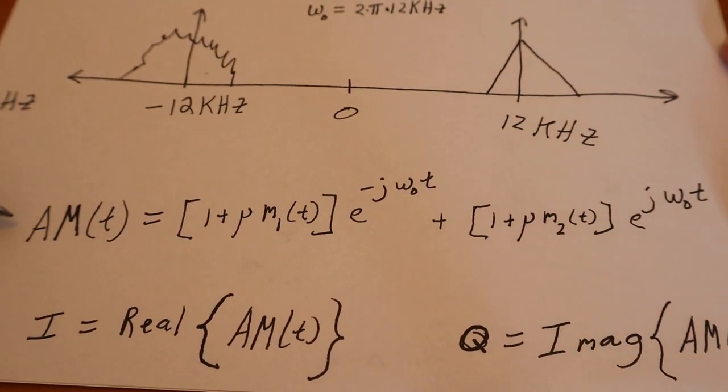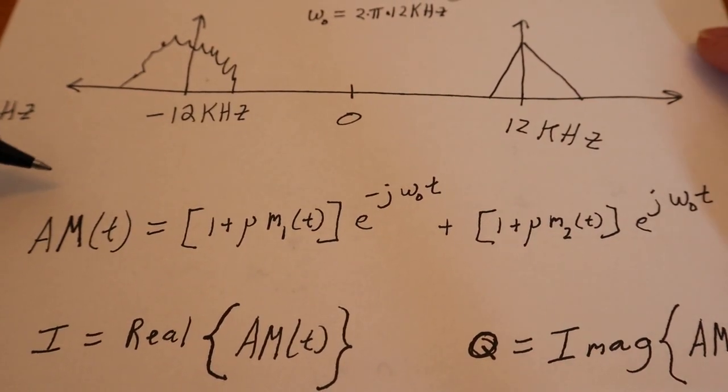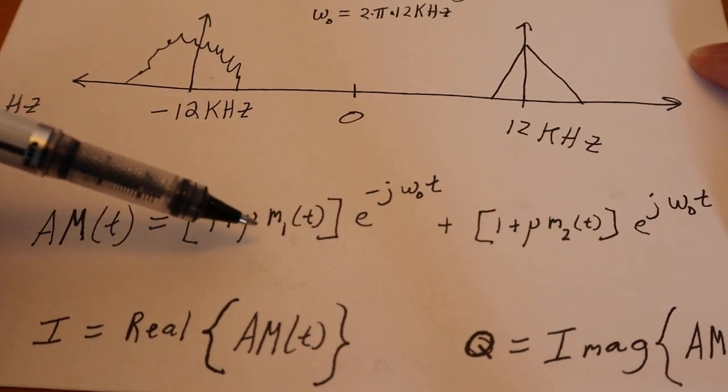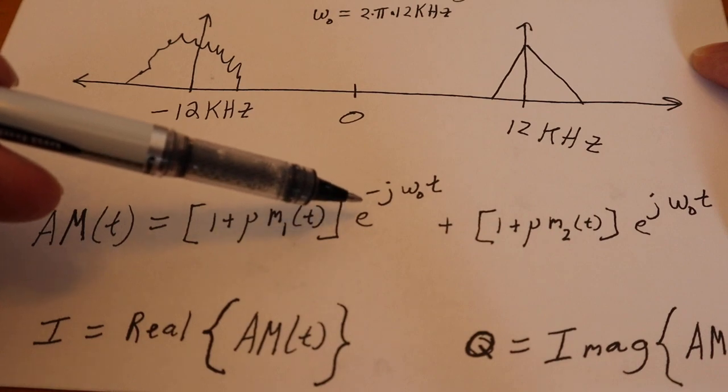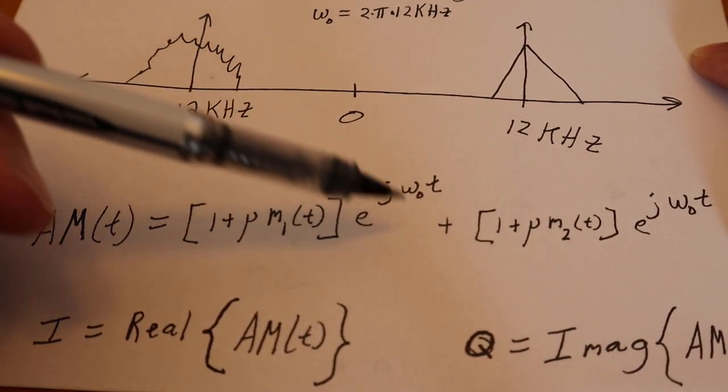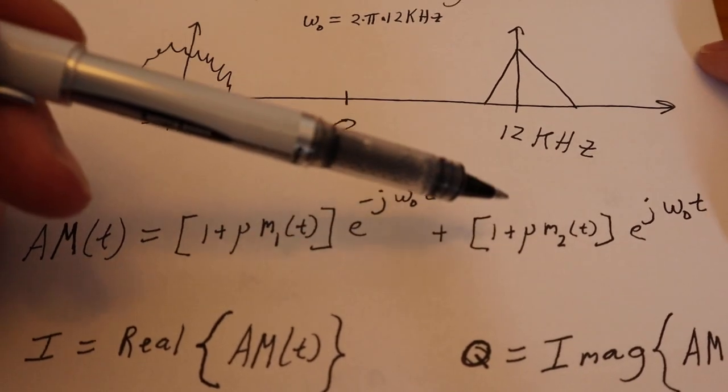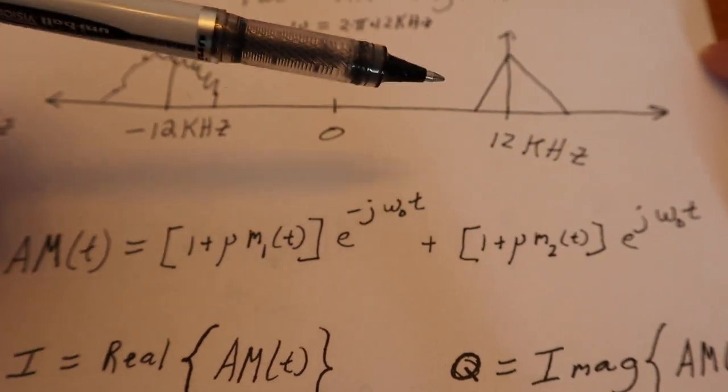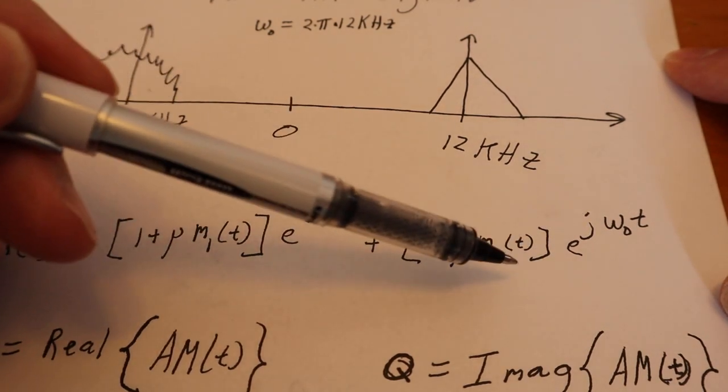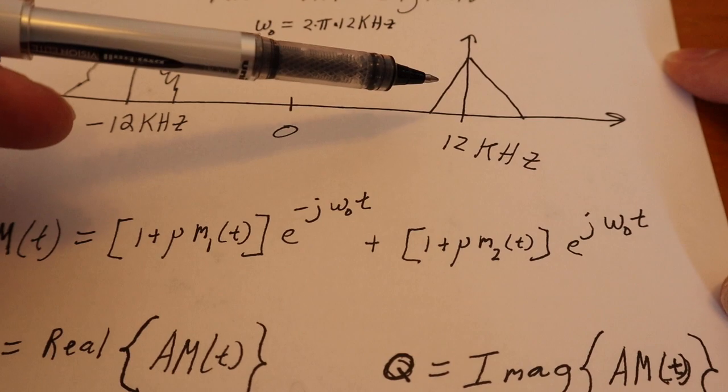here is the AM radio equation that describes this spectrum. Here's our first term, m of 1 multiplied by our negative phasor, which puts the signal over here, plus this guy, which is our second message signal. And he's times the positive e to the j omega zero t, and his spectrum is up here.